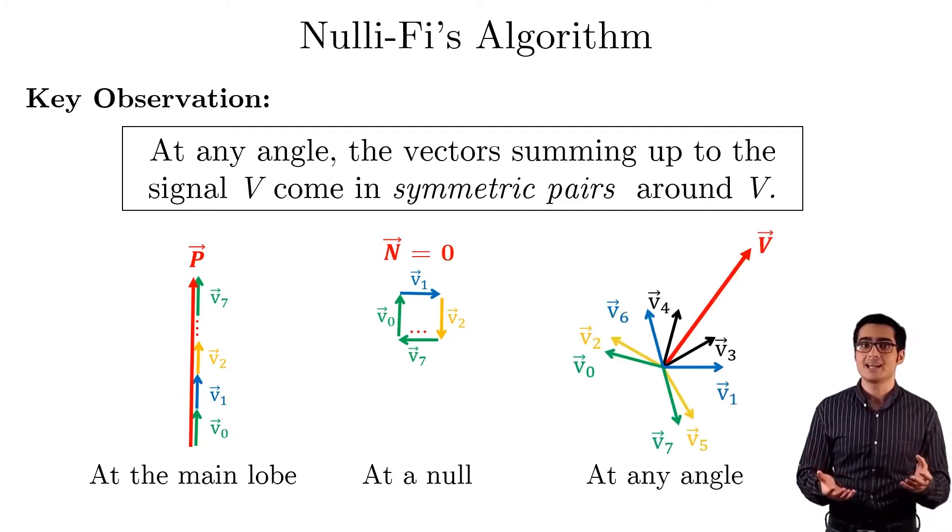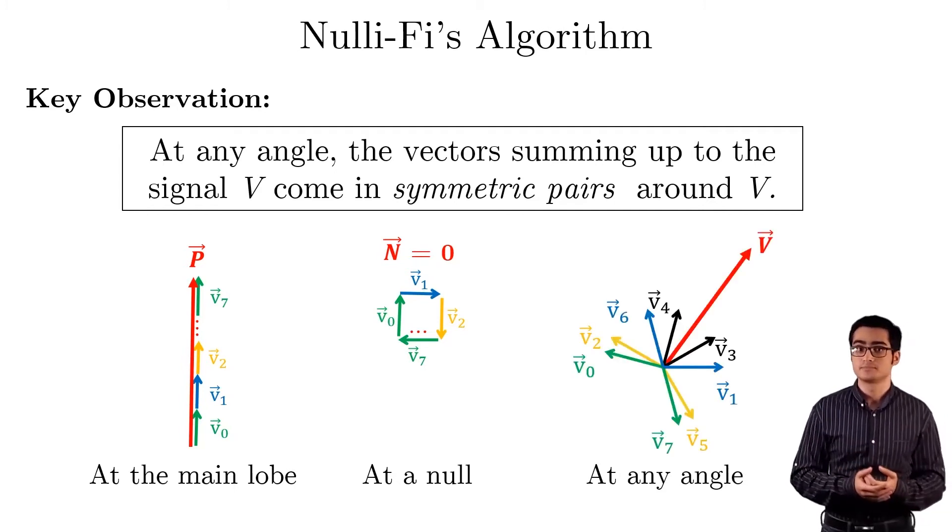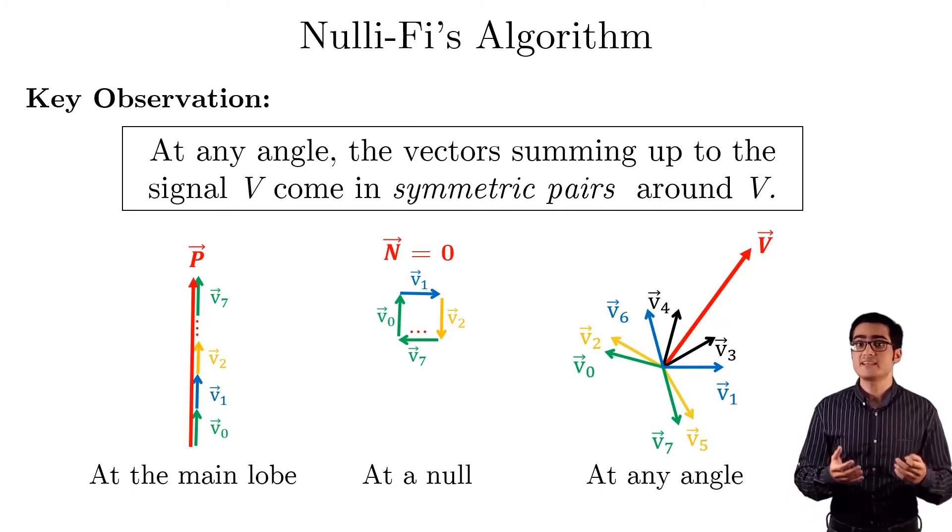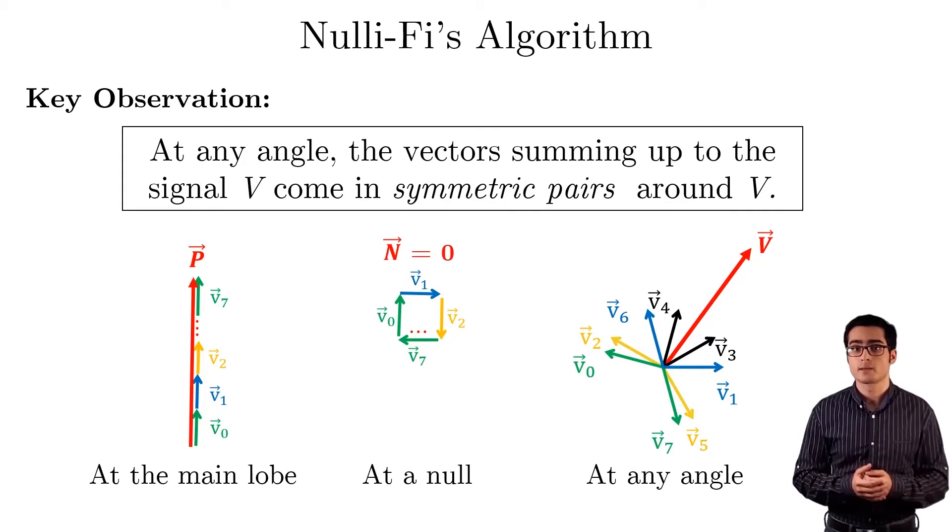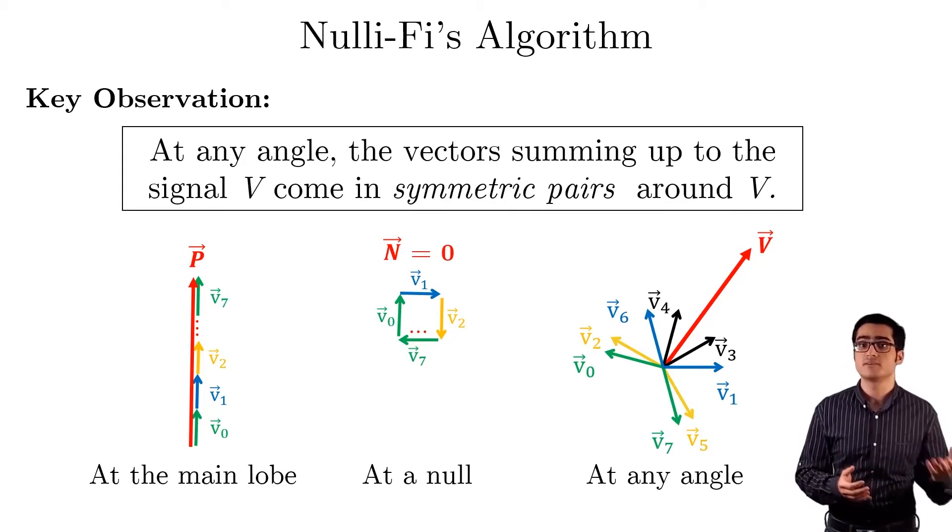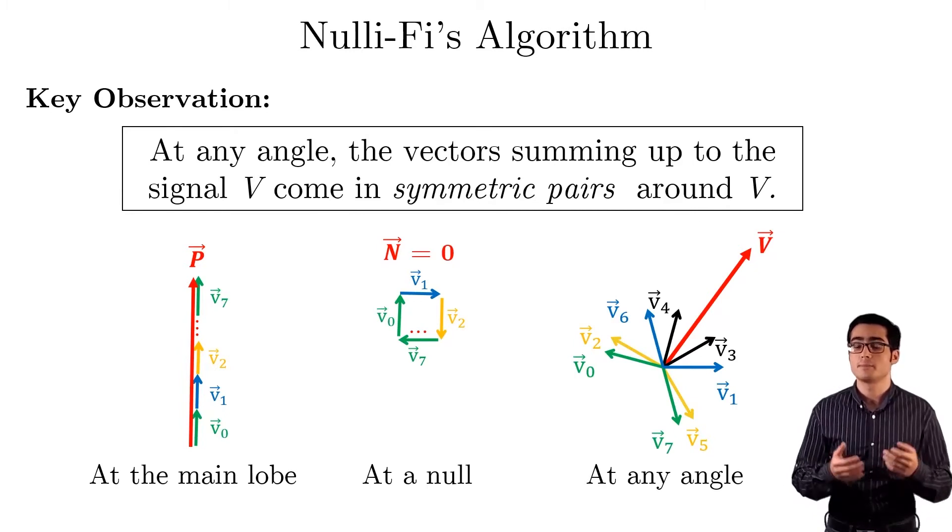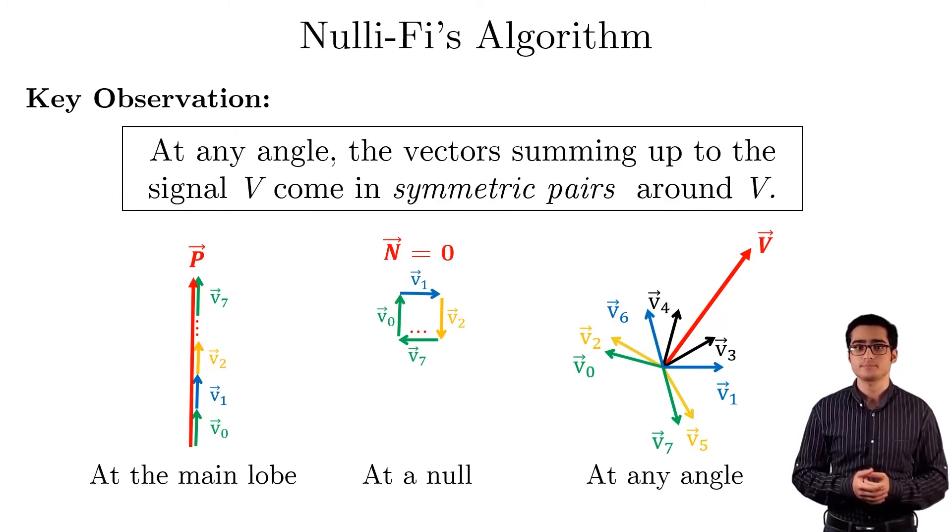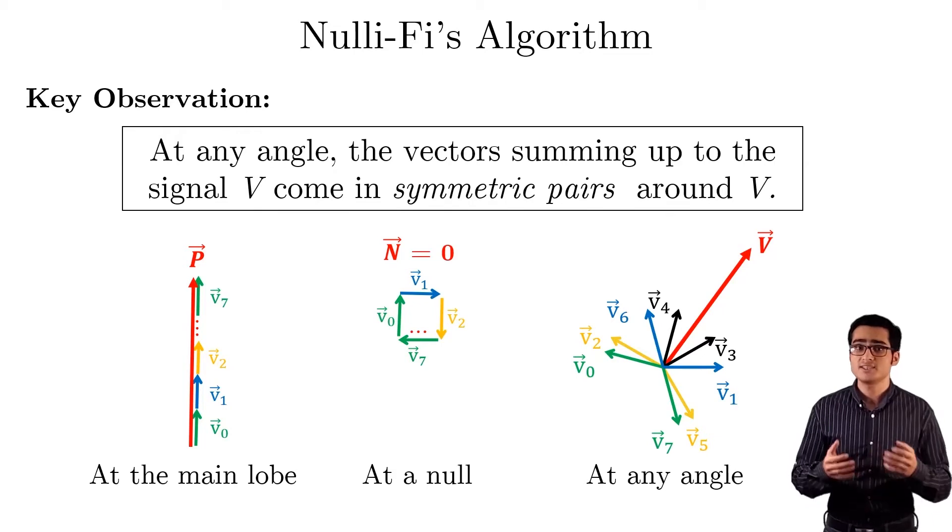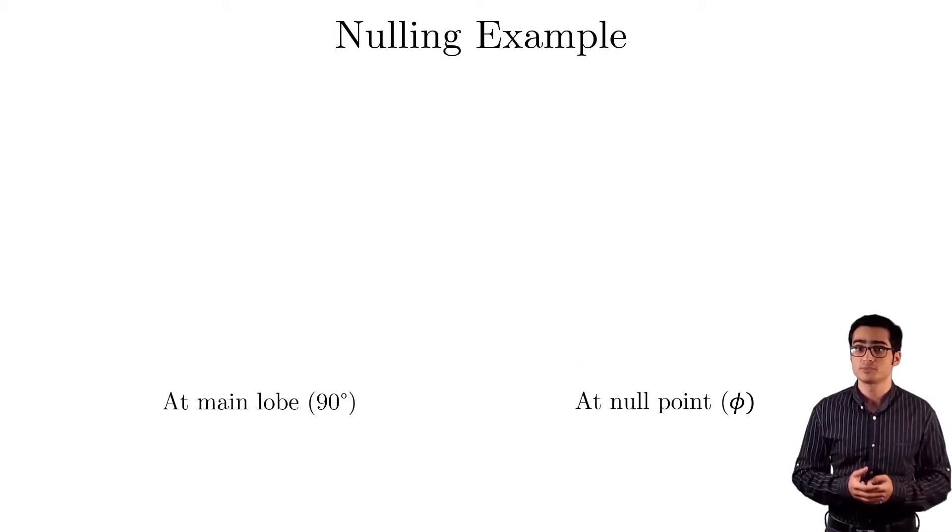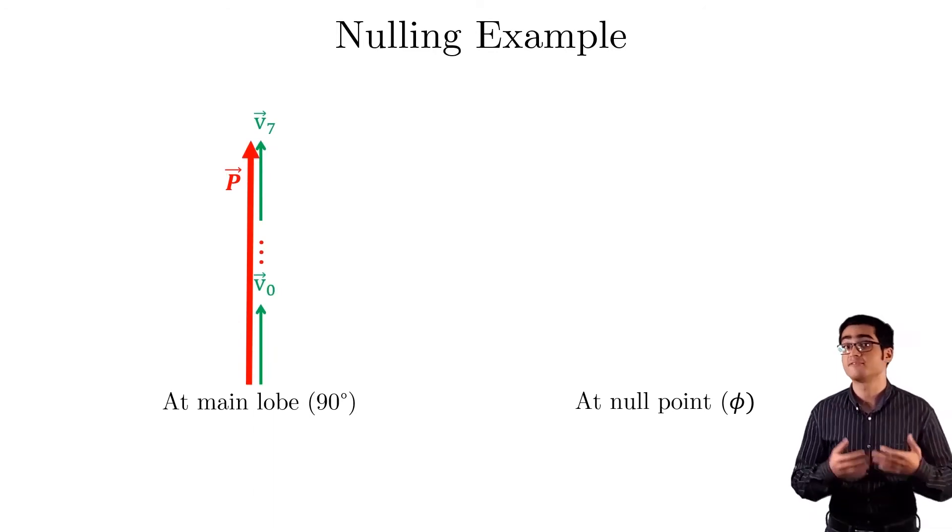For example, here the vectors vi and their summation v are shown for an arbitrary angle. We can see that v1 and v6 are symmetric around v. So are v0 and v7. There are two other pairs that come in black and yellow, as you can see here.